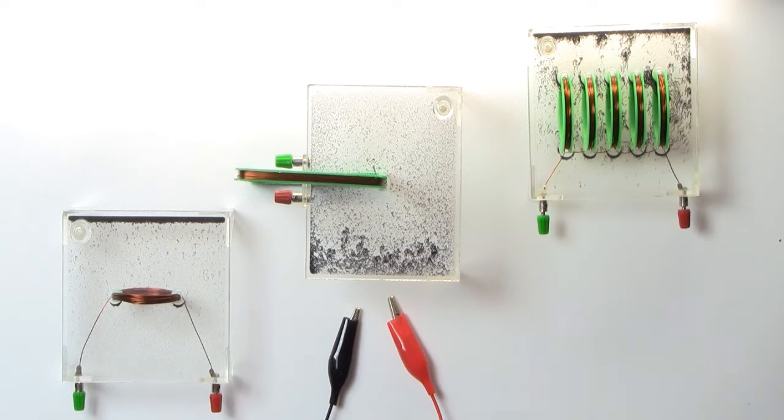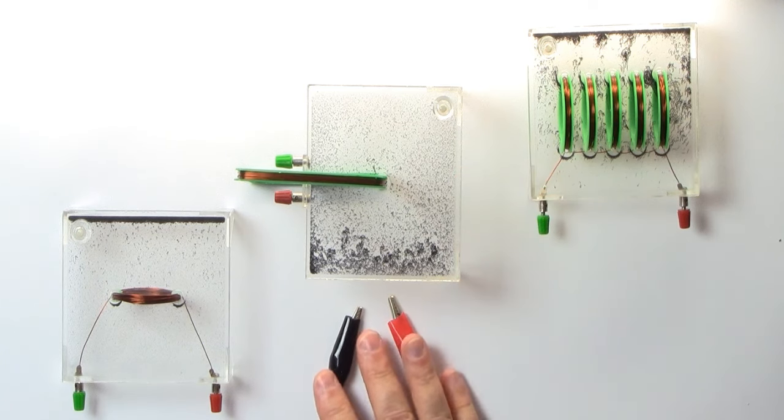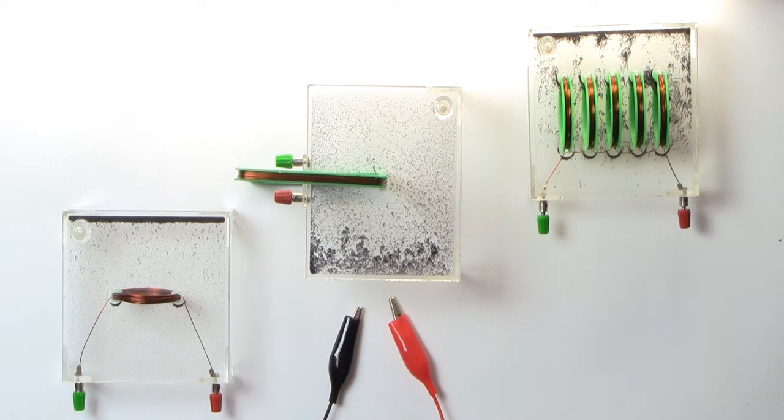We will shake up the oil and evenly disperse the iron powder, then connect the coils to a low voltage power supply. Approximately two volts and a current of about five amps will flow. The iron powder will align itself with the magnetic field lines, allowing us to visualize the otherwise invisible magnetic field.